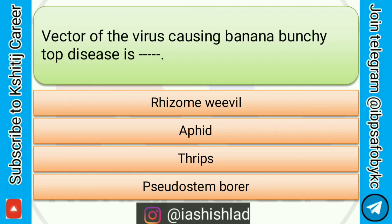Vector of the virus causing banana bunchy top disease is. Options are: rhizome weevil, aphid, thrips, pseudostem borer. Correct answer is aphid.